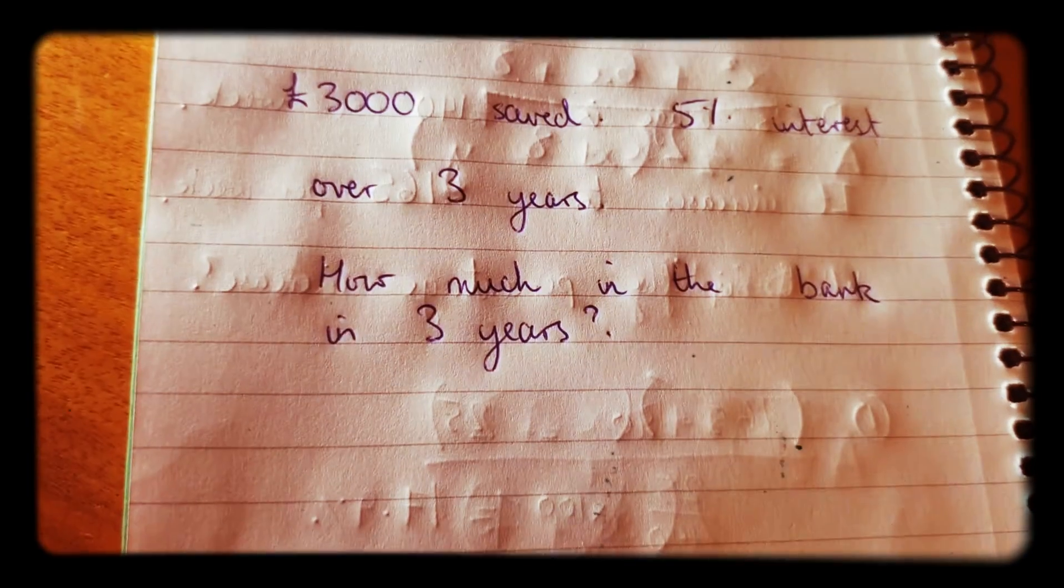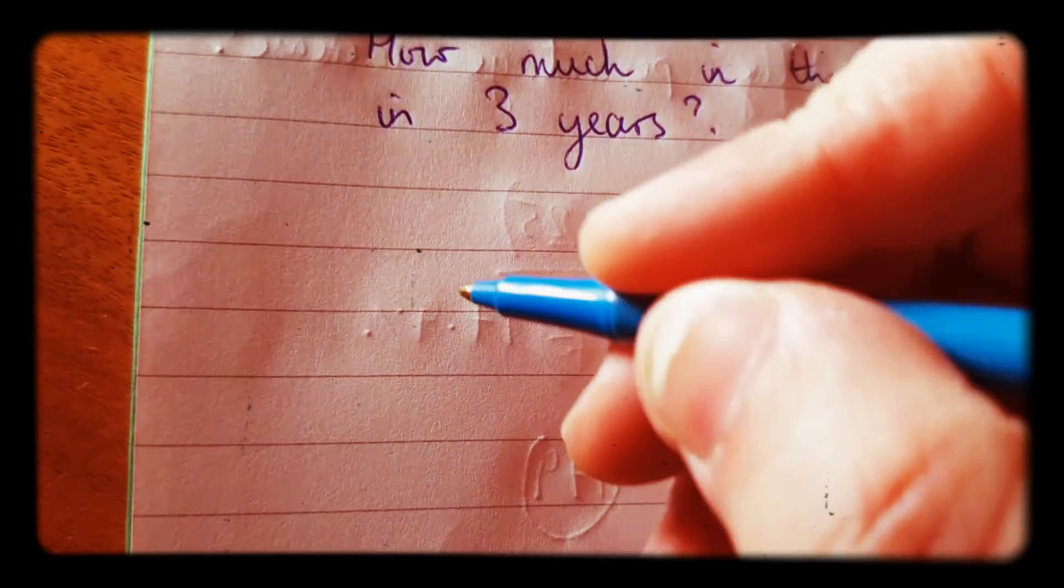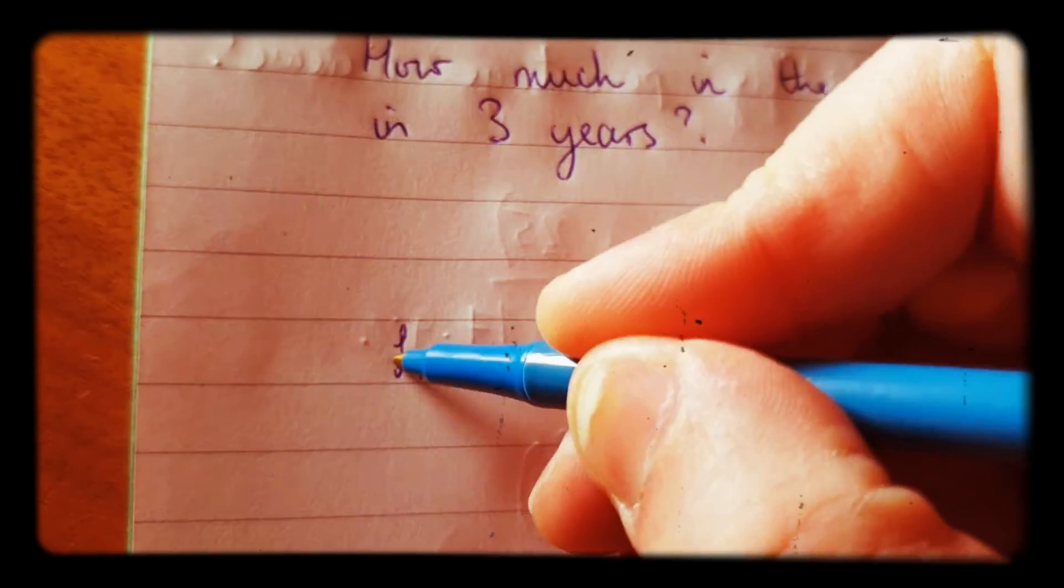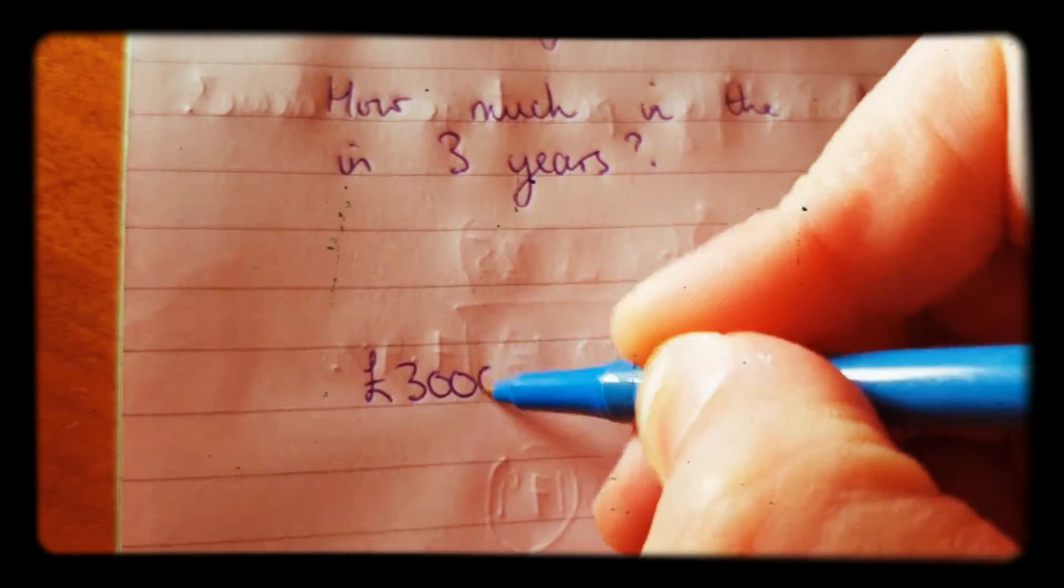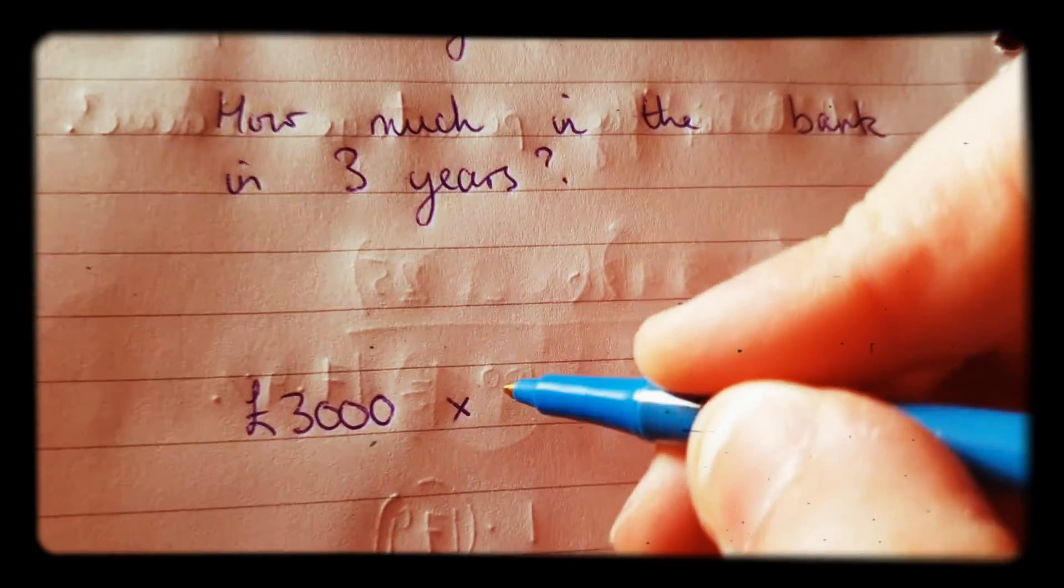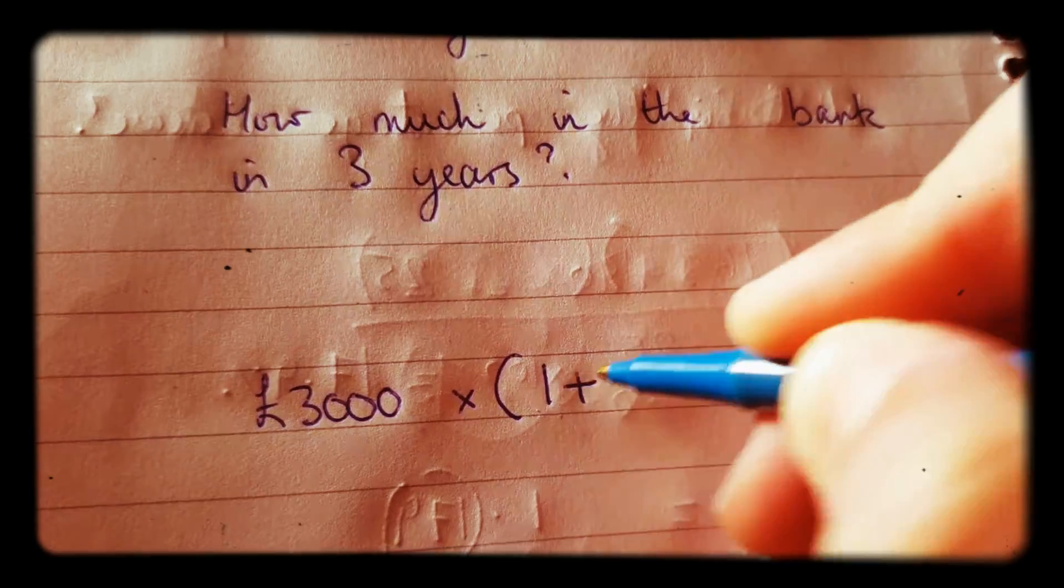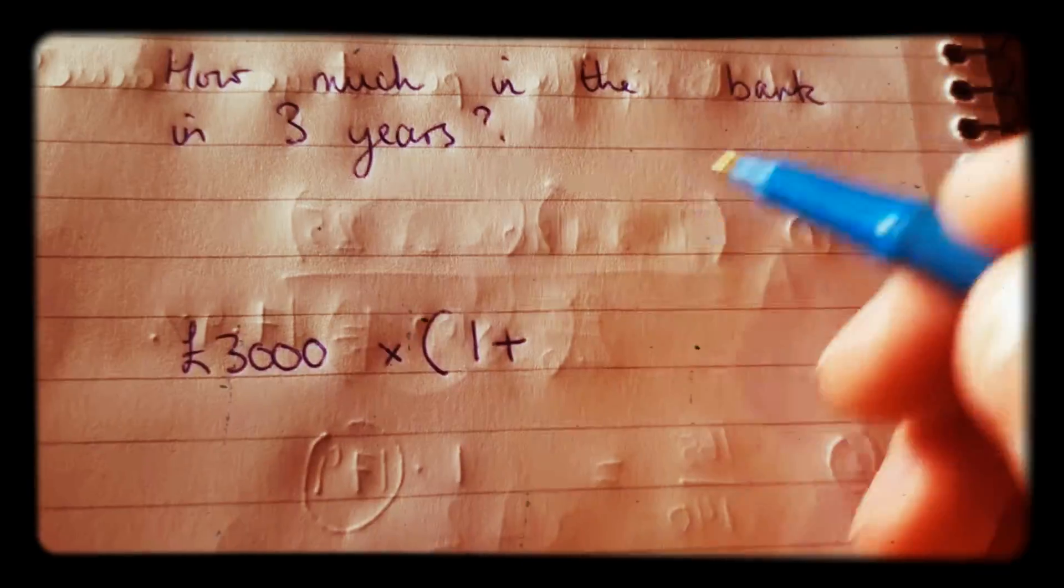So this one, you're going to use the compound interest formula. What you do is you do £3,000 times one plus the interest rate as a decimal.